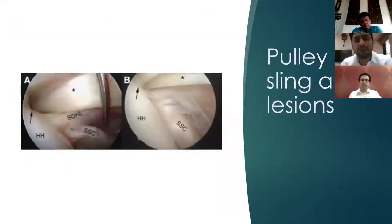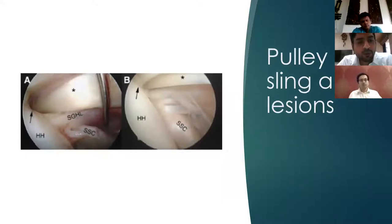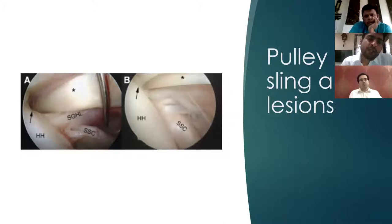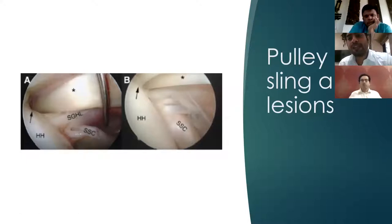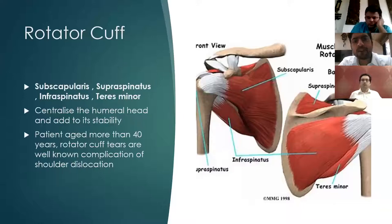An example of pulley sling lesions: the left image shows the long head of biceps tendon with the pulley sling system of the superior glenohumeral ligament working fine. On the right, there is a lesion of the pulley sling with fraying of the SGHL and the long head of biceps tendon pushed medially. The rotator cuff comprises four muscles: subscapularis, supraspinatus, infraspinatus, and teres minor. They centralize the head into the glenoid and add to stability. Patients usually over 40 years of age have rotator cuff tears, which can end with instability.